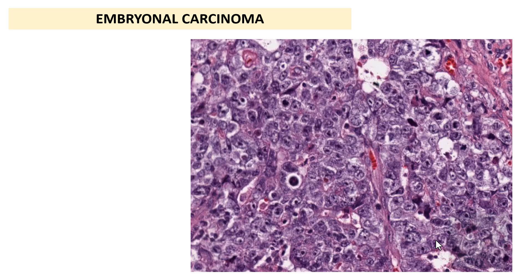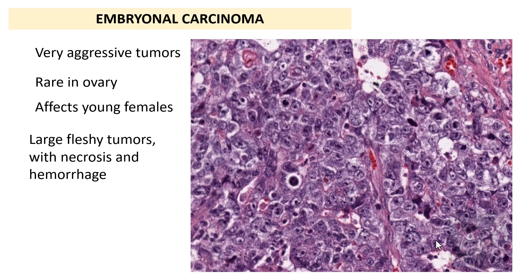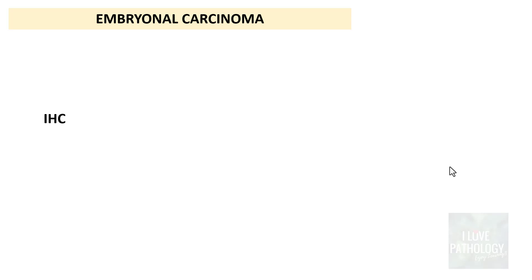The next important tumor is Embryonal Carcinoma — tumors of totipotent germ cells. These are very aggressive tumors, very rare in the ovary, affecting usually young females. These are large fleshy tumors with large areas of necrosis and hemorrhage. They contain highly pleomorphic cells with large nuclei, vesicular chromatin, prominent nucleoli, and abnormal mitoses. On immunohistochemistry, they show similar markers to dysgerminoma, and additionally cytokeratin is also positive.